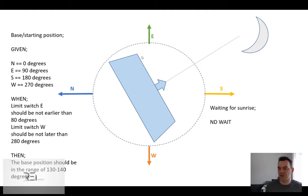This is the typical situation when we have the limit switches at 80 degrees and on the other side at 280 degrees.